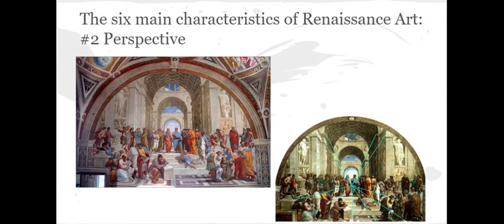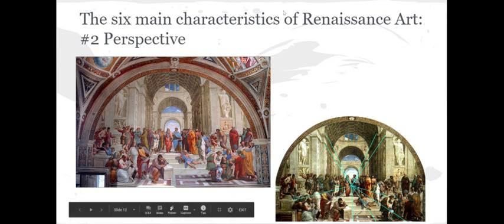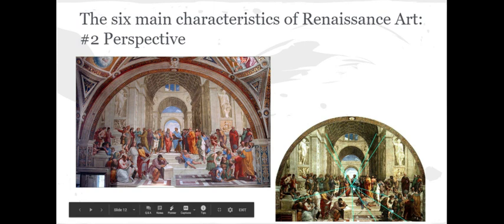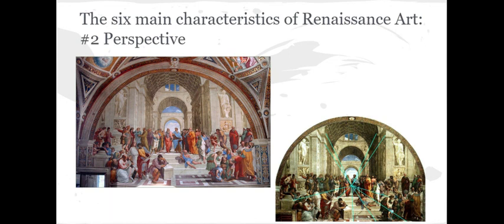Second, we have perspective. Instead of looking flat on the page, if you look at this painting — the School of Athens — you can see that things in the middle are smaller and things on the outside are closest to us, offering perspective. The perspective comes from the middle of the painting and shoots out. It's almost like a 3D movie where things are coming at you, so it doesn't look as flat as Middle Ages art.